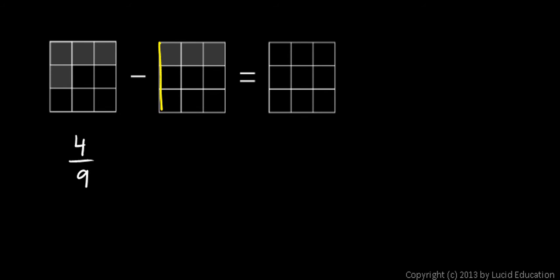The second diagram, again, we have a square divided into nine pieces. And you can see that three of them are shaded. So this diagram represents, or is represented by the fraction, three ninths.